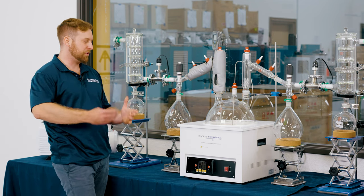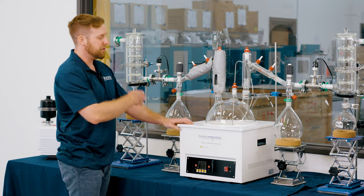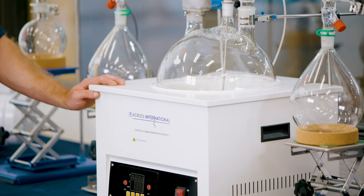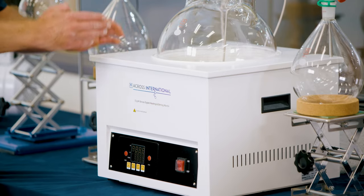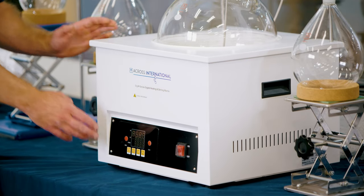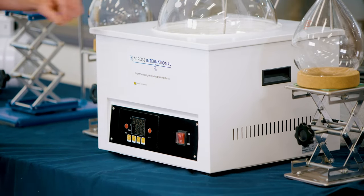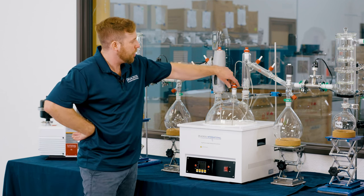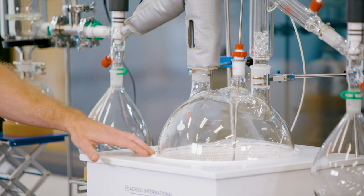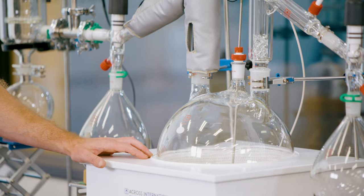So the first thing that we're going to notice is our mantle. This is where heating and stirring are controlled. Unlike a lot of other mantles out there, ours has the stirring as well as the heating included into one system. Not only that, but you have the ability to either run process temperature or temperature off of the mantle, giving you much more versatility.